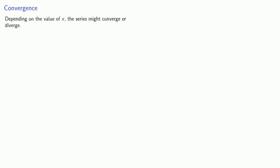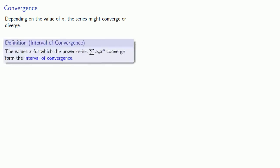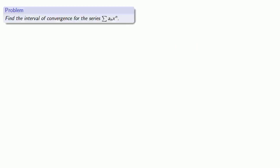The big problem is that depending on the value of X the series might converge or diverge. The values of X for which the power series converges form the interval of convergence, and this leads to a new and important problem: find the interval of convergence for a given power series.